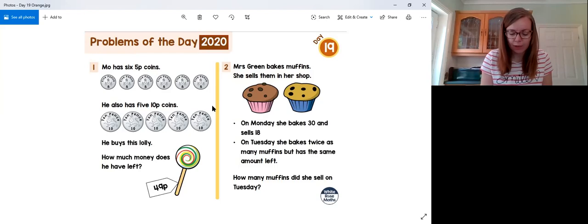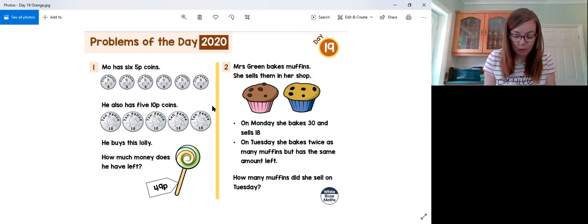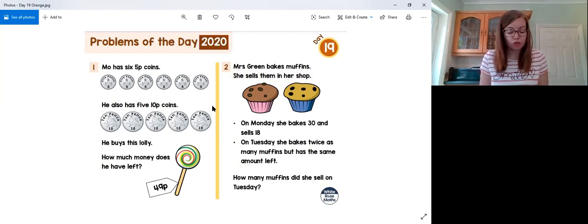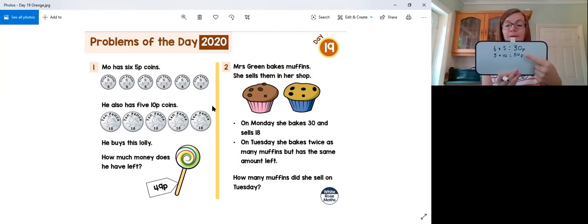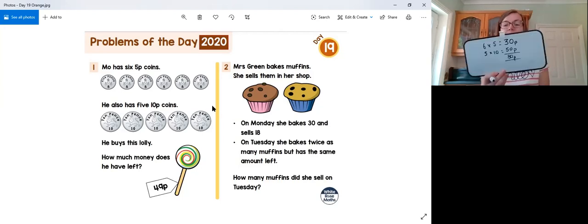If we've got six lots of five, we know we're doing a multiplication. So we're doing six times five or five times six, whichever you find easier. Which we know means that Mo has 30p in 5p coins. But Mo also has some 10p coins. He has five lots of 10p coins. So five times 10 or 10 times five. So he has 30p in 5p coins and 50p in 10p coins. We add those together. I can see that Mo has 80p.